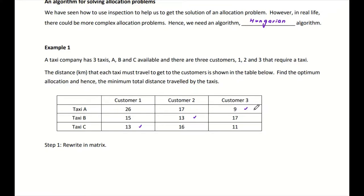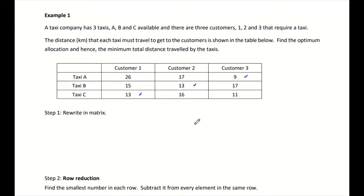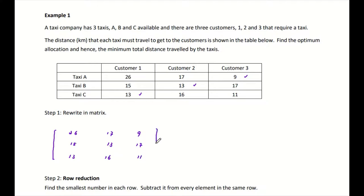By inspection, looking at the smallest value per row: taxi A is nearest to customer 3, taxi B is nearest to customer 2, and taxi C is nearest to customer 3 — but two taxis are going to customer 3 and none to customer 1. Looking at it from the customer side: the nearest taxi to customer 1 is taxi C, nearest to customer 2 is taxi B, and nearest to customer 3 is taxi A. So step one of the Hungarian algorithm: rewrite all information into a simple 3×3 matrix without the taxi and customer labels: 26, 17, 9 / 15, 13, 17 / 13, 16, 11.